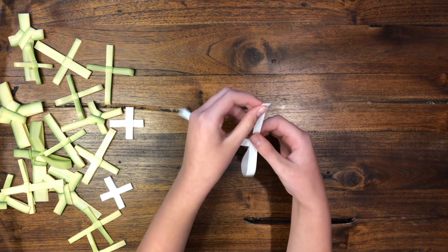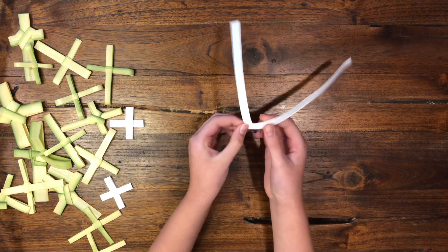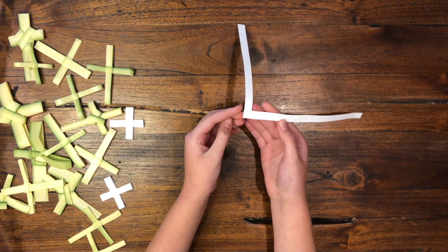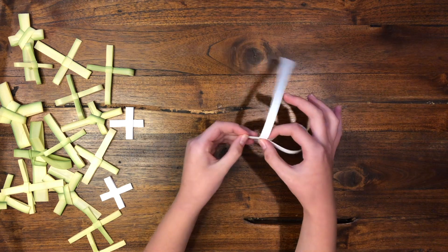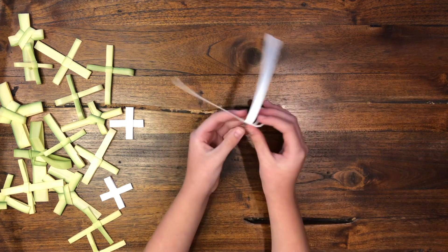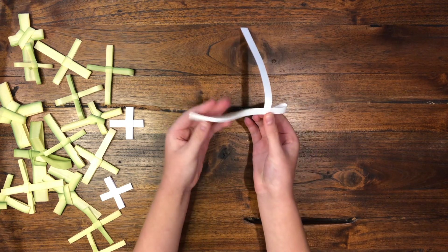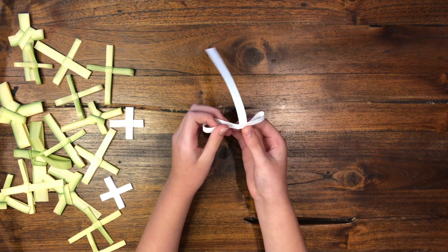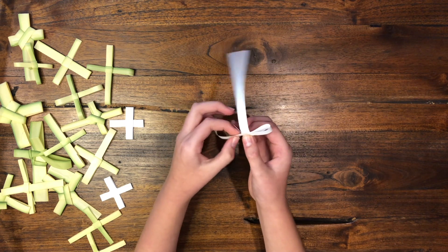And that is the most important step to making your cross. Once the knot is made, she'll take the same side, put it back through the knot, creating the first arm. Once she has the arm, the length that she'd like, she'll take the end and bring it back through the knot to make a second arm that is the same size.